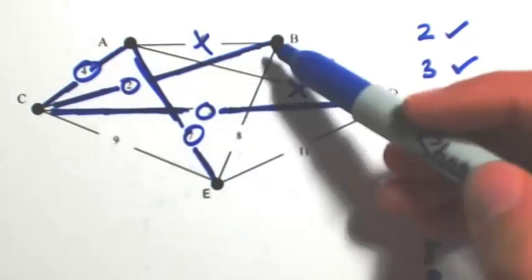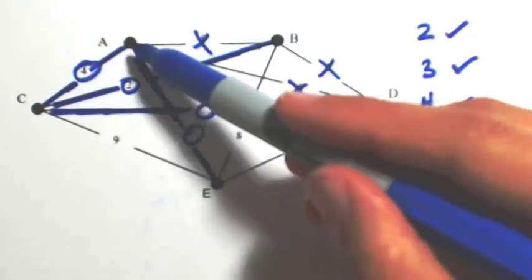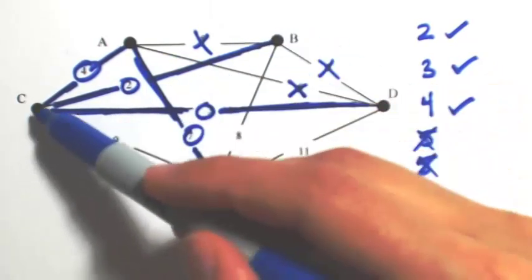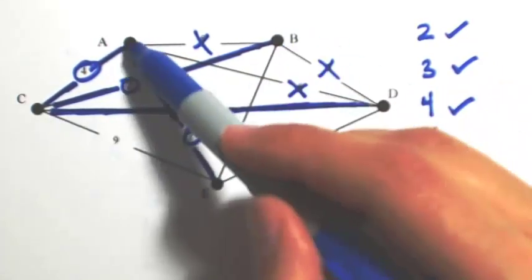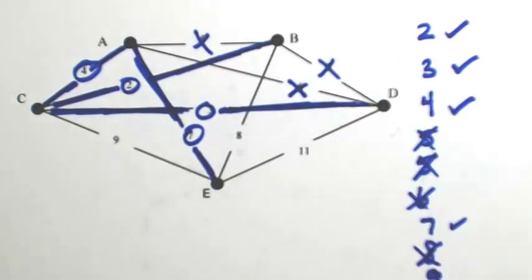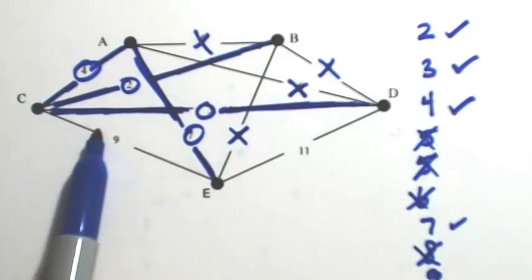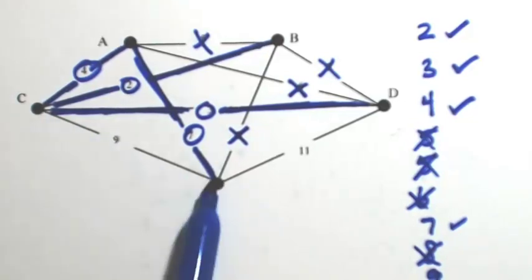Looking at 8, if I were to use 8, that's going to close out a circuit between A, E, B, and C. Got a little kind of an X there. So I'm not going to use that. With 9, that would close out a circuit between A, C, and E. So we're not going to use that.